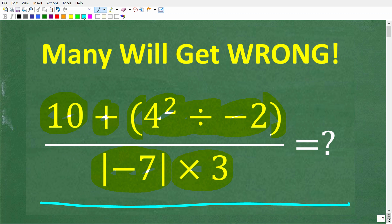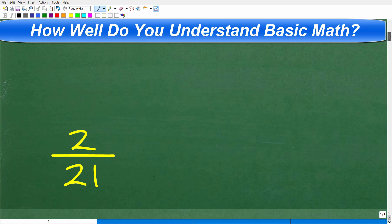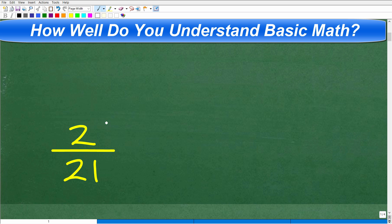I'm going to show you the correct solution in just one second, then of course I'm going to solve this problem step by step. One more time we have 10 plus parentheses 4 squared divided by negative 2 parentheses over the absolute value of negative 7 times 3. So what is the answer to this problem? The answer is 2 over 21.